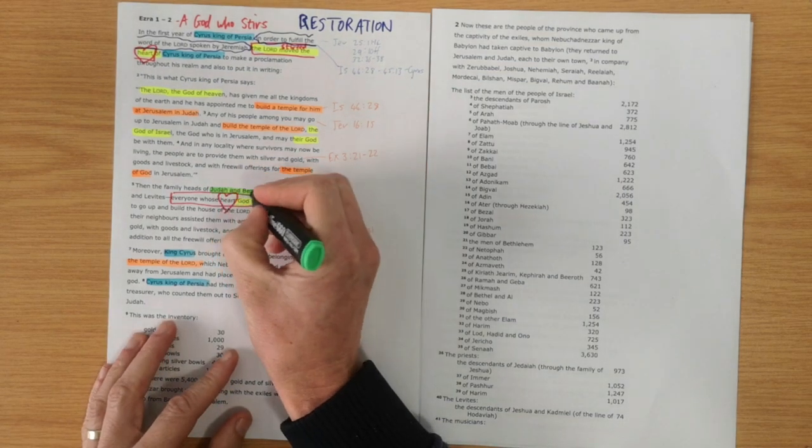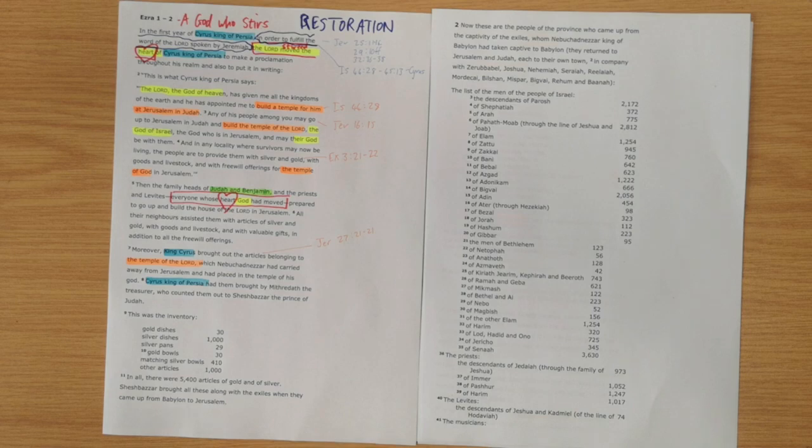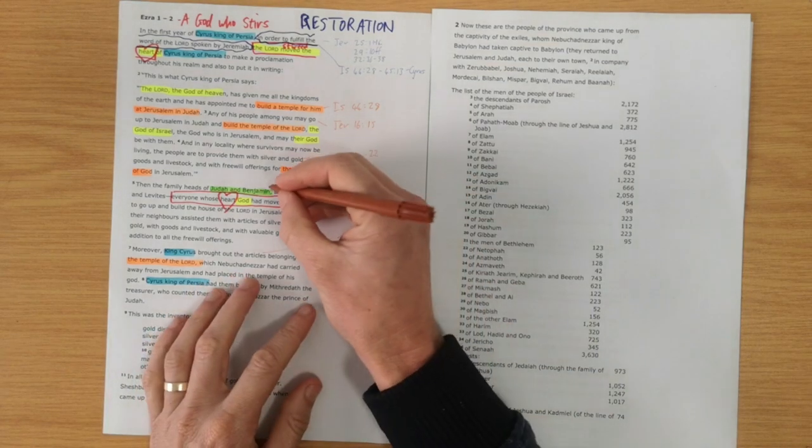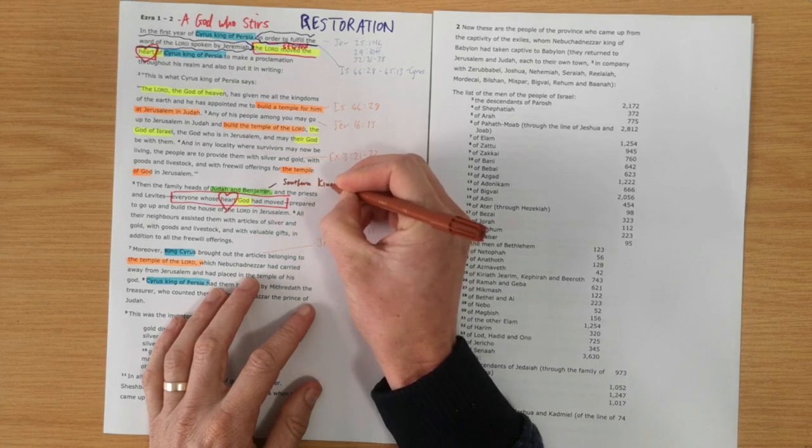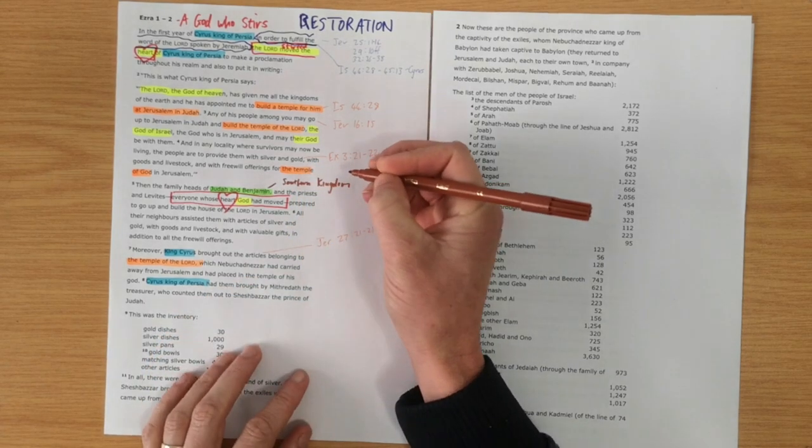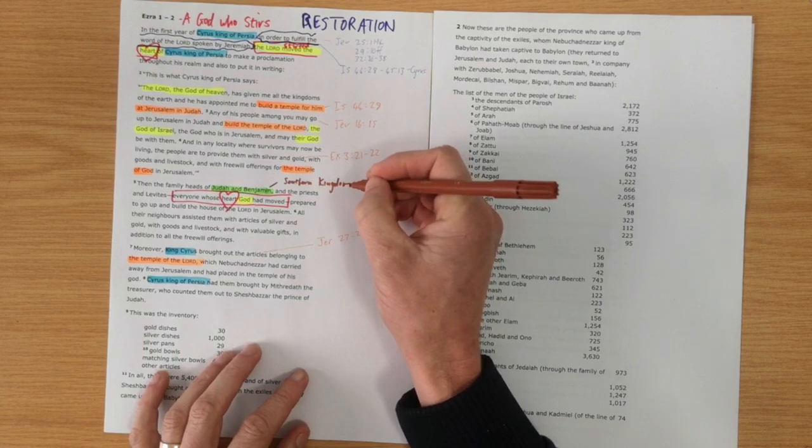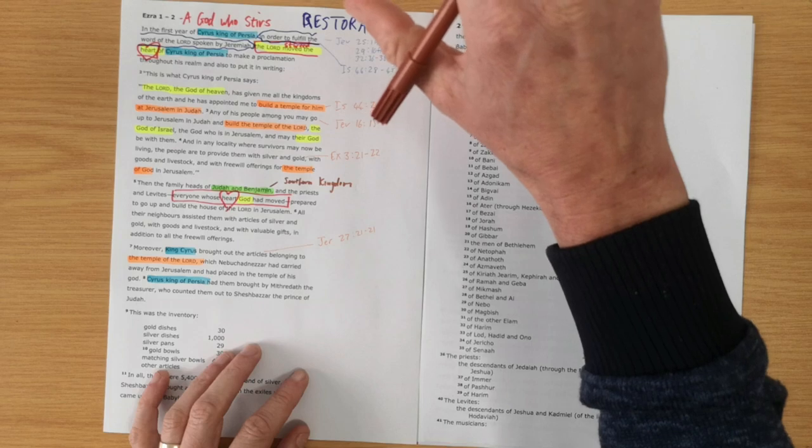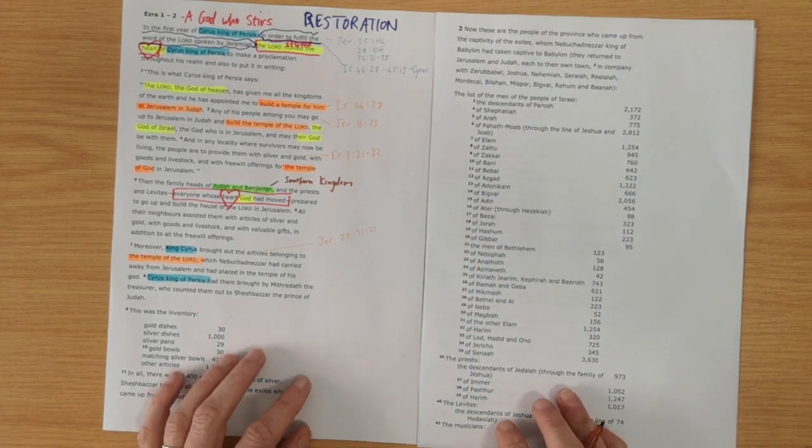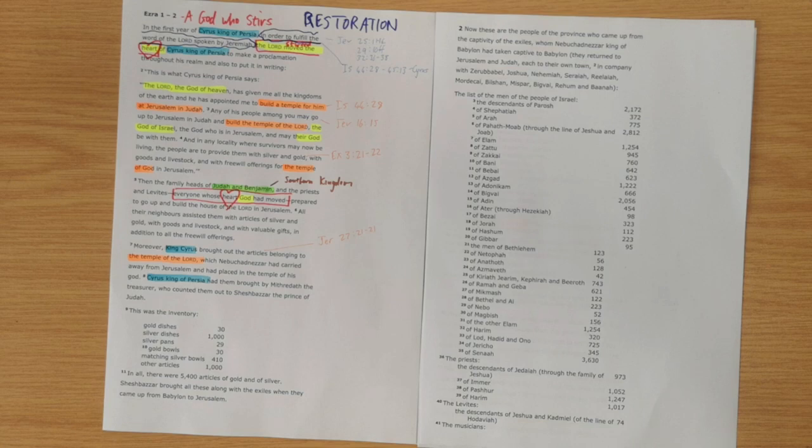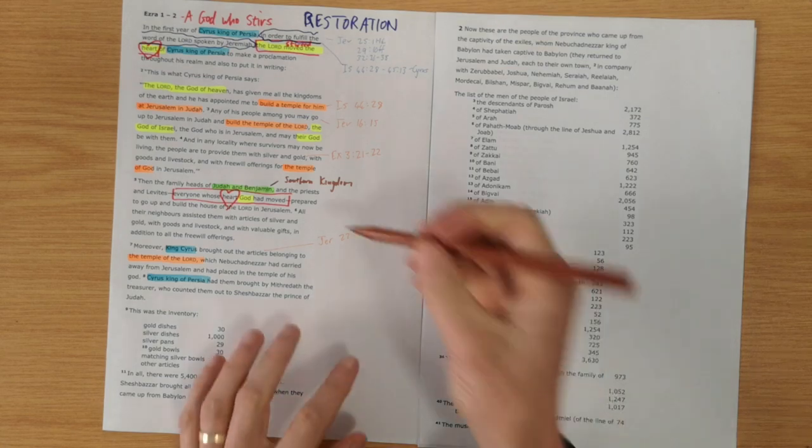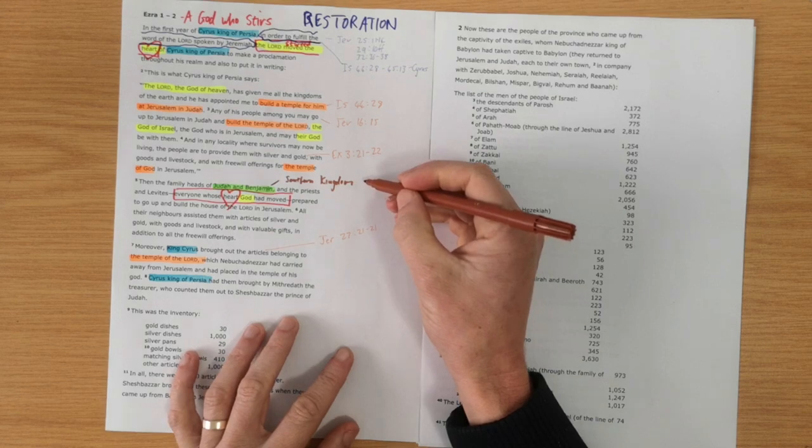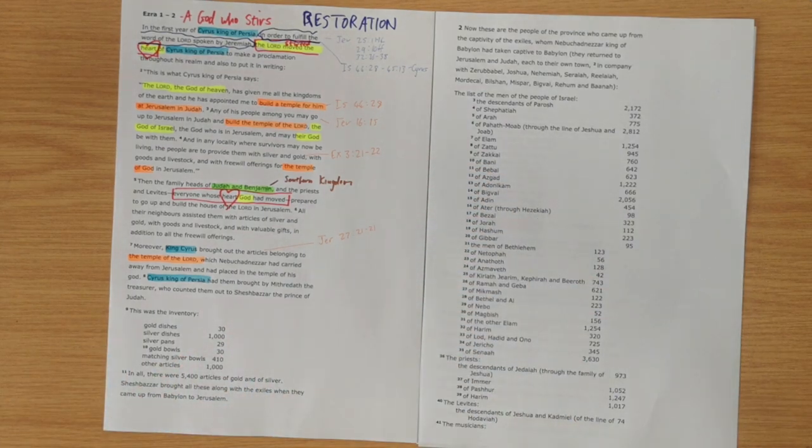Just a note here. So, Judah and Benjamin are mentioned. They obviously make up the southern kingdom of Judah. Many years earlier, in 722 BC, the Assyrians had come in and taken the northern tribe of Israel, also into exile, and we never hear from them again. So, the northern tribe is gone. The southern tribe of Judah are now the remnant of God's people who continue working out this plan of restoration. God's promises continue through them.